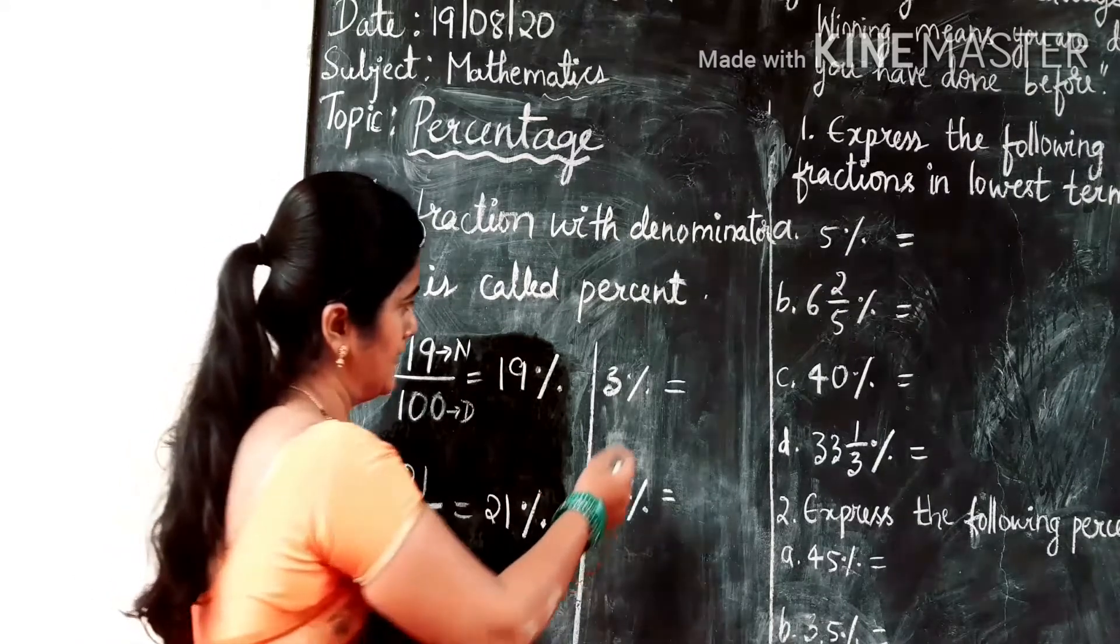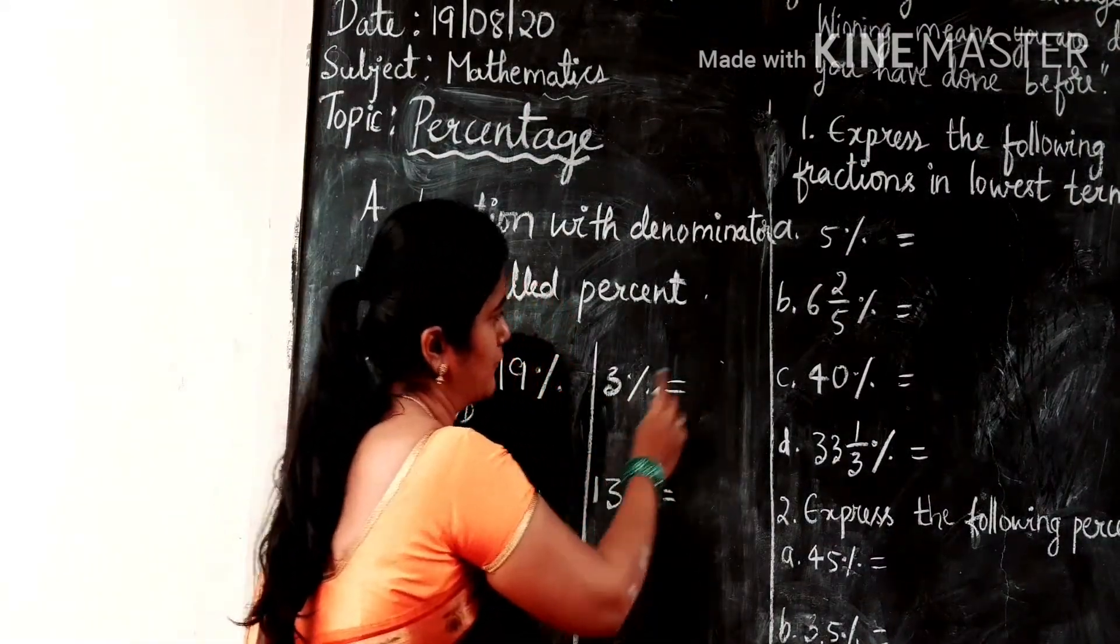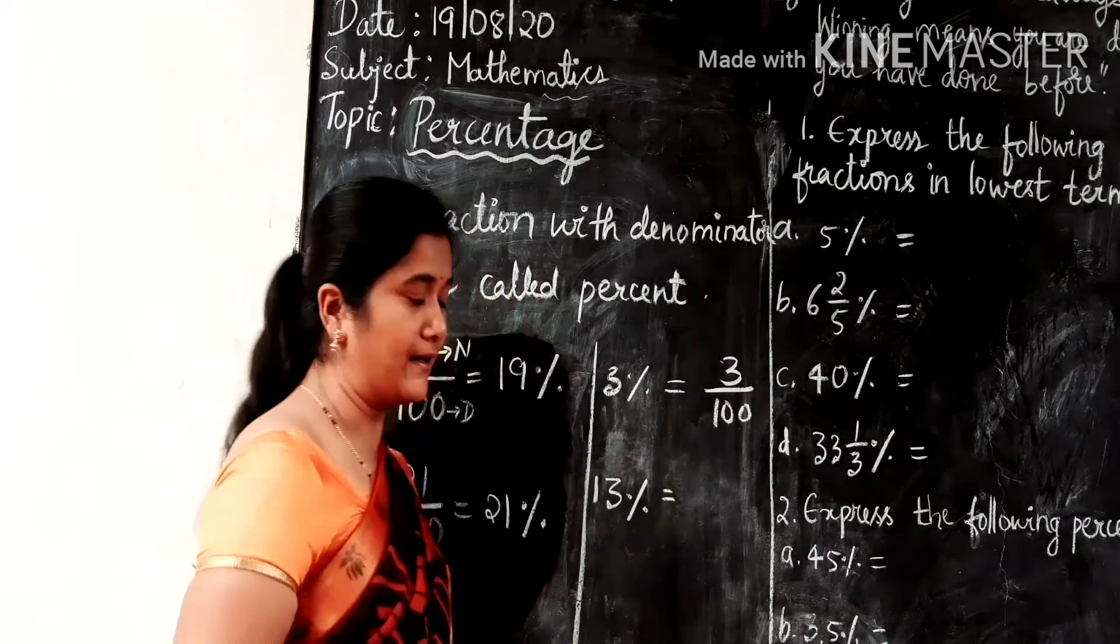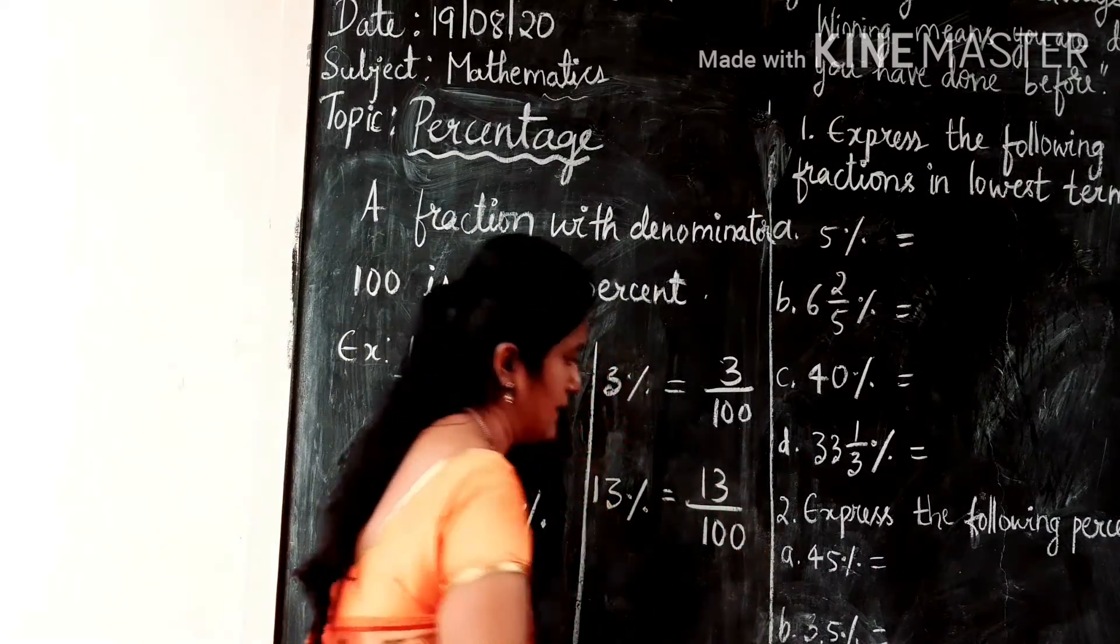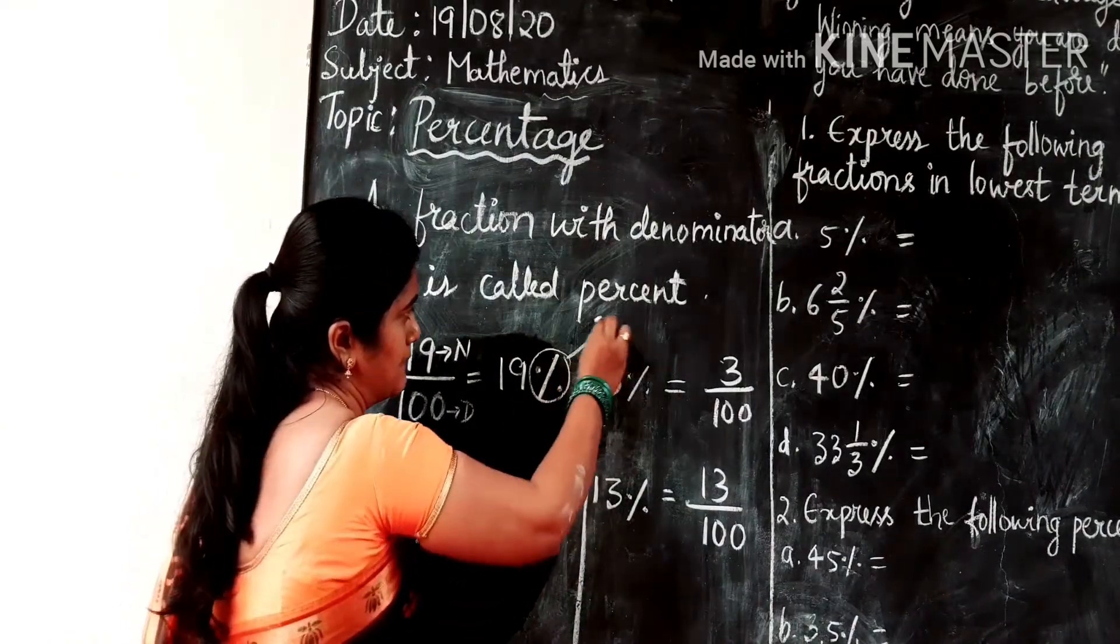We can also write 3 percent as, if I want to convert this into fraction, 3 percent can be written as 3 by 100 and 13 percent can be written as 13 by 100. So this symbol represents percent.